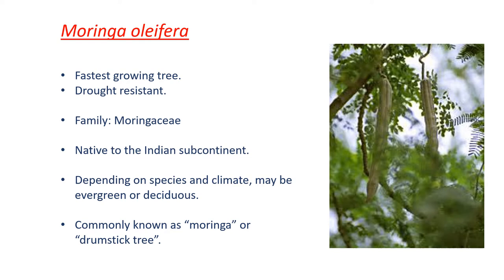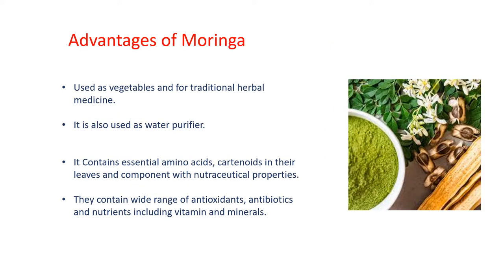It is commonly known as Moringa or drumstick tree. Now let's see some of the advantages of the Moringa tree. It is widely cultivated for its young seed pods and leaves, which are used as vegetables and for traditional herbal medicines.